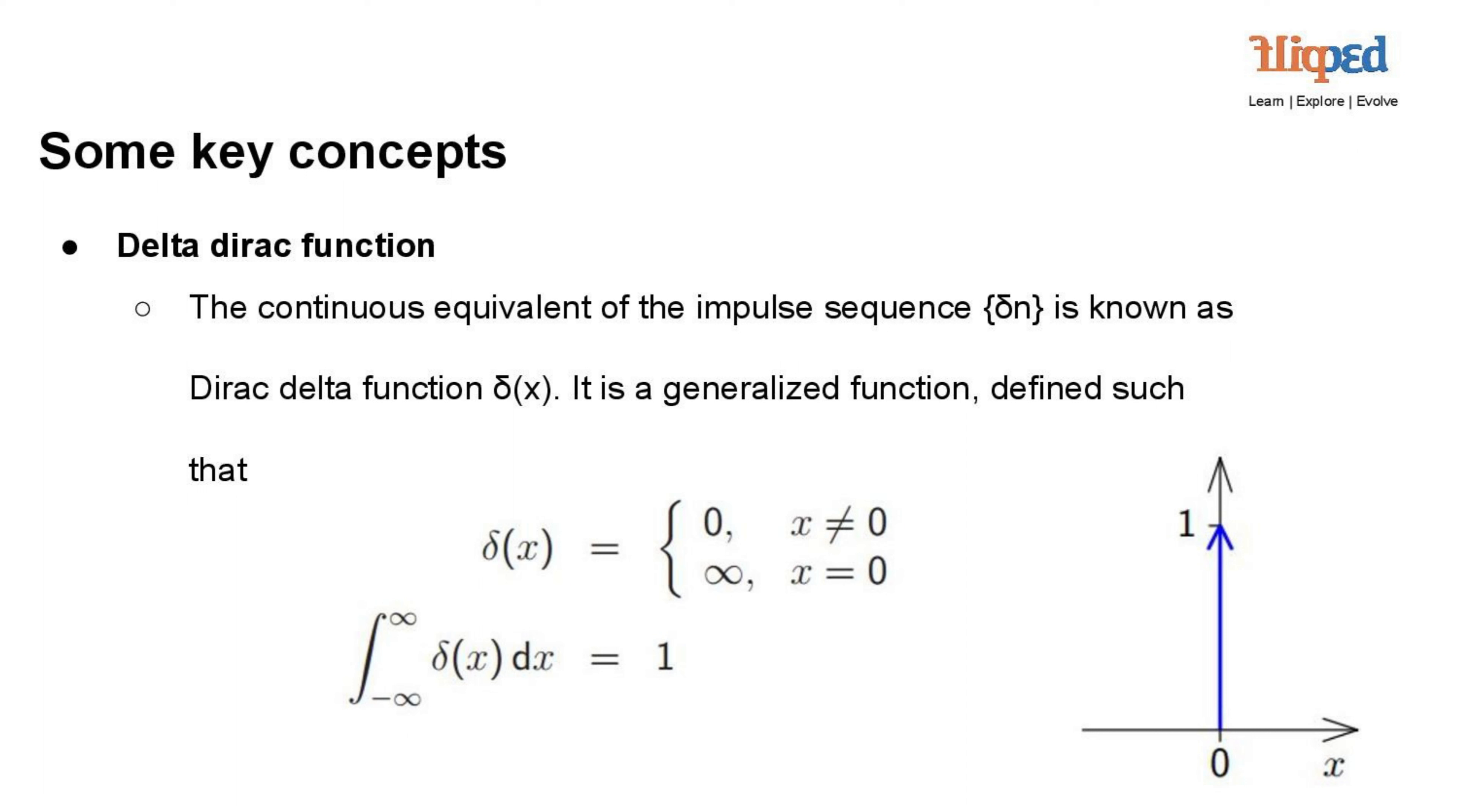Third, the integration of f(x) times delta x dx equals f(0). The convolution of the Dirac delta function with any function f(x) yields the value of f(x) at x equals zero.